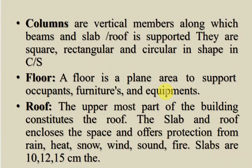Columns are the vertical members along which beams and slabs and roofs are supported. They are square, rectangular, or circular in cross section. The floor is the plain area to support the occupants, furniture, and equipment. The floor should be level so that furniture and other items can be placed on it. Floor is a plain area where furniture and equipment can be kept.